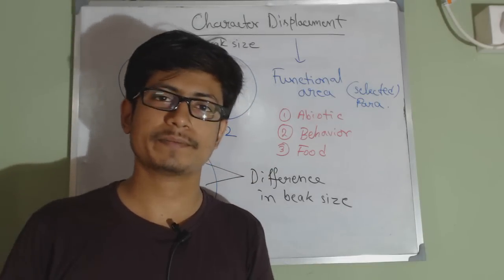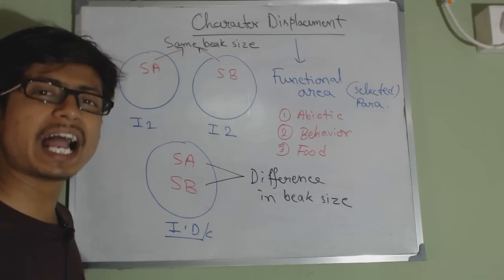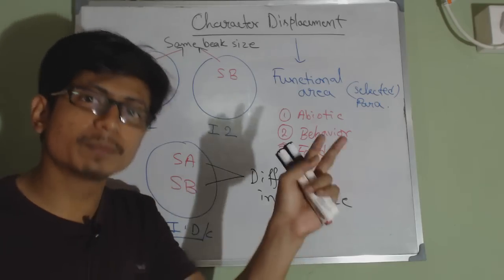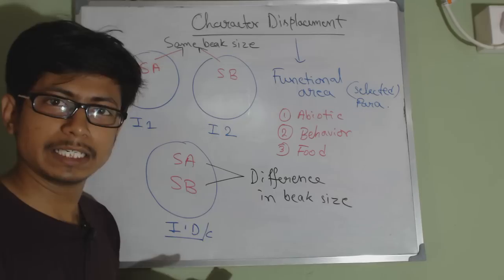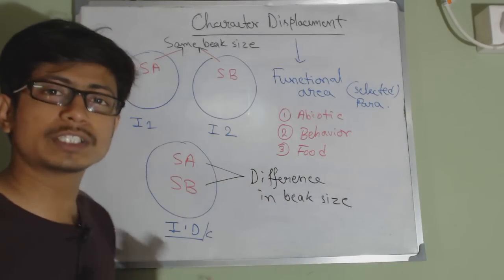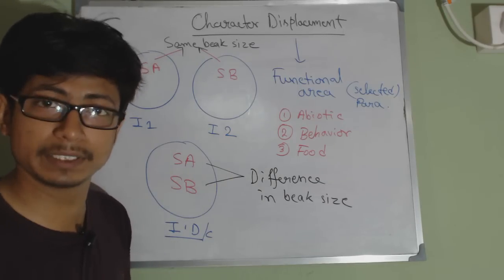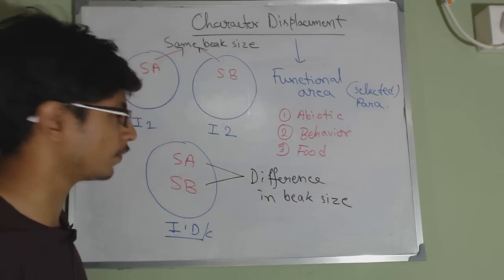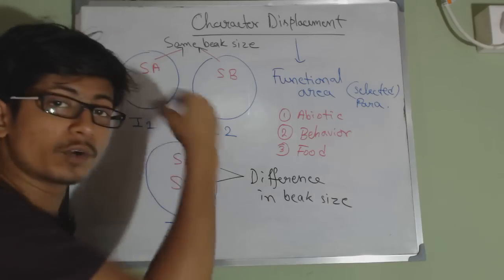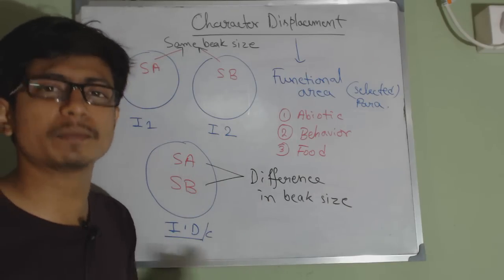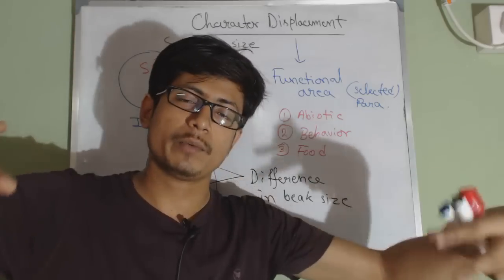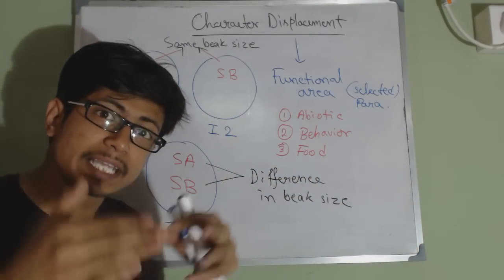This is called character displacement. If two organisms stay in different habitats in different regions, those species have similar morphology. But if two organisms stay in the same habitat, they tend to have distinct morphologies to minimize competition. When the same species are present in separate habitats, they have more morphological similarity — they don't need to change because they present independently. But when forced to be in the same region, they develop very distinct morphologies.